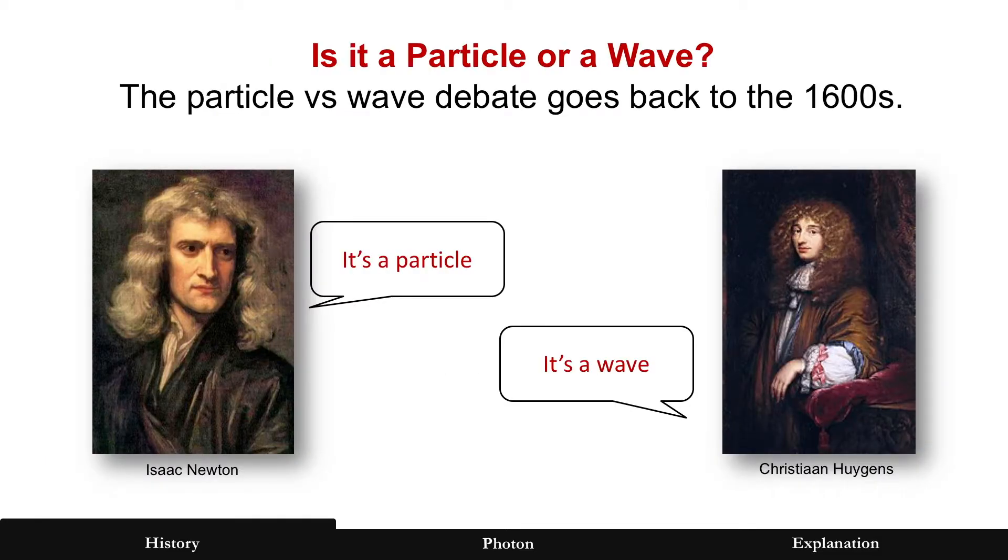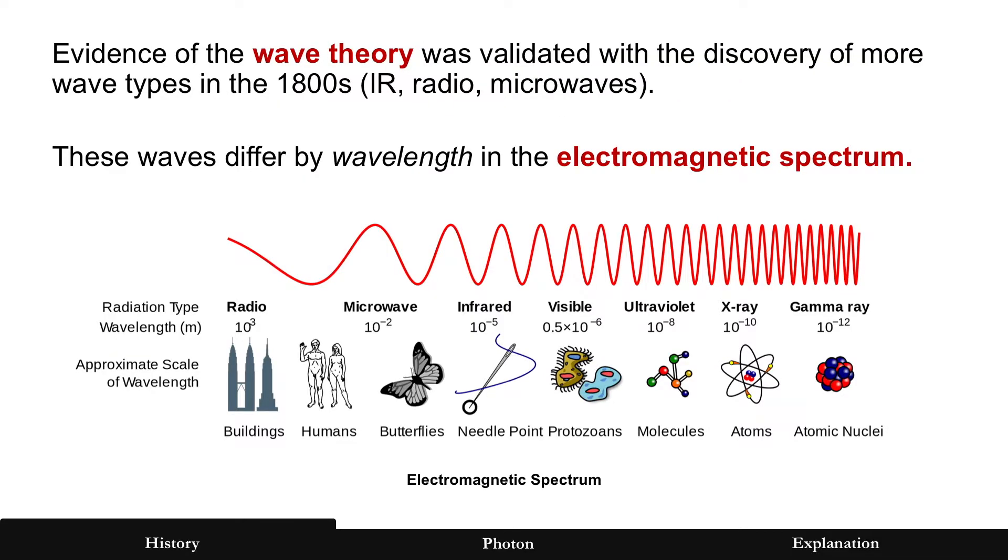But is light a particle or is it a wave? This is a debate that goes back to the 1600s. Evidence of the wave theory was validated with the discovery of more wave types by the 1800s when radio waves and infrared were discovered, and really it's just a difference in wavelength.